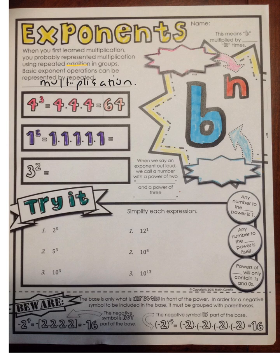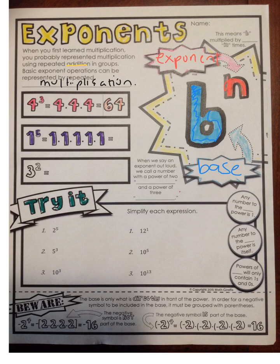Over here on the right, we have an example. We've got our big B, and we have it raised to a little n. This n is the exponent, and this B is called the base. This means that the B right up here is multiplied by itself n times.